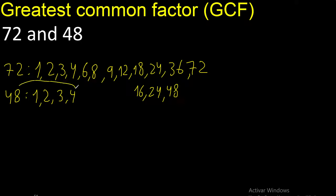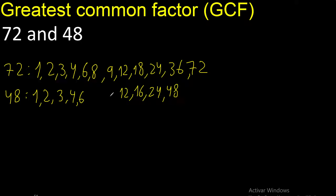Divided by 4 is 12. Cannot be divided by 5. Divided by 6 is 8. Next, cannot be divided by 7. Next, 8 — 8 is here.